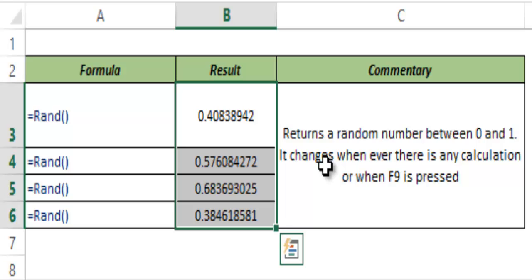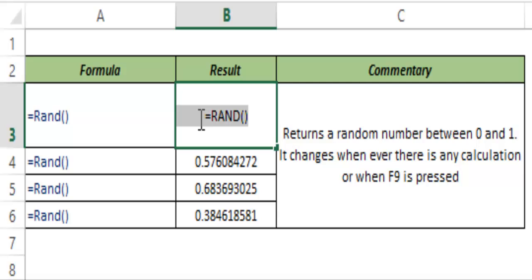If you want to generate a set of numbers but don't want them to keep changing, you want them as static. It's a good practice to copy this and paste it as values. If you want to do this for only one cell, you can go into edit mode, select this, and press F9. This generates one of the numbers and hit enter. This converts from a formula to a static number.